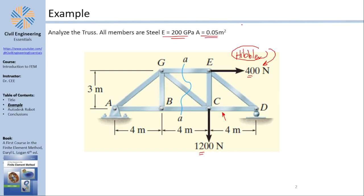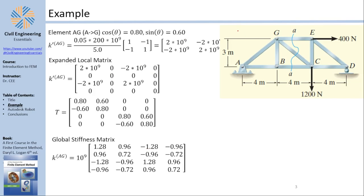The first thing to do is find the local and global transformed stiffness matrices. This is a continuation of a longer video series, which I will link in the top right. If you missed it, please watch those first — especially the lectures on the principles of truss elements, also linked above.